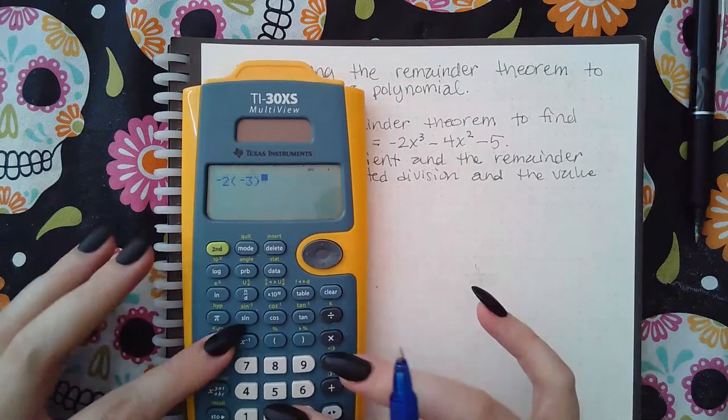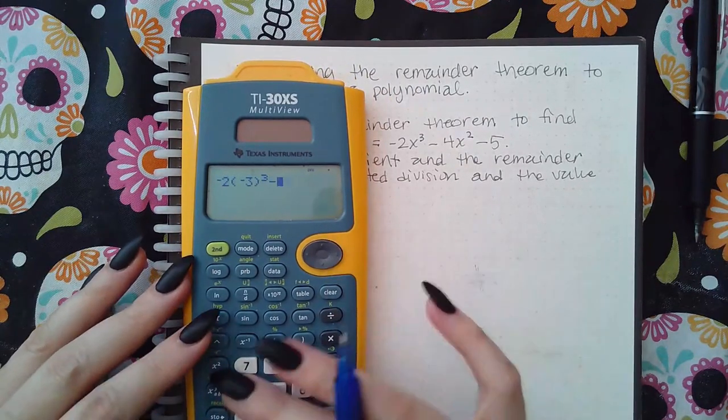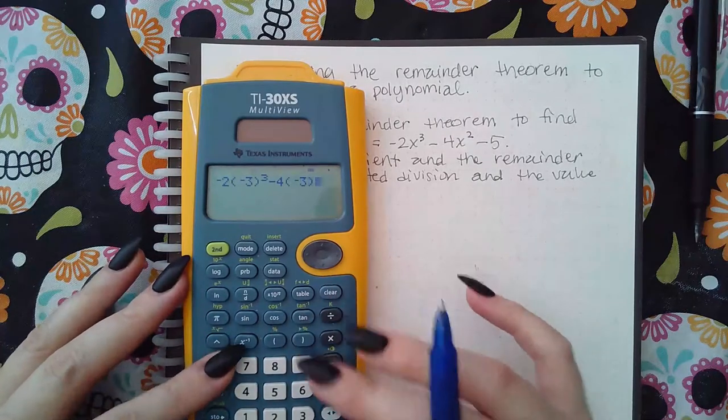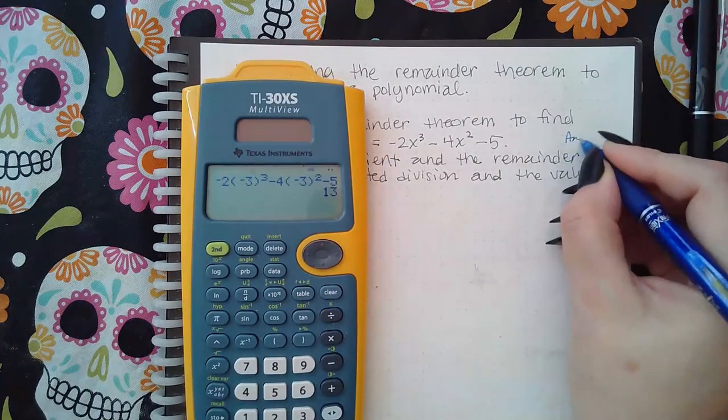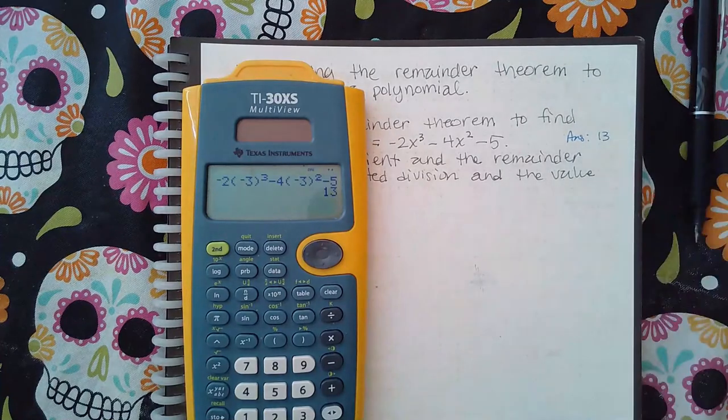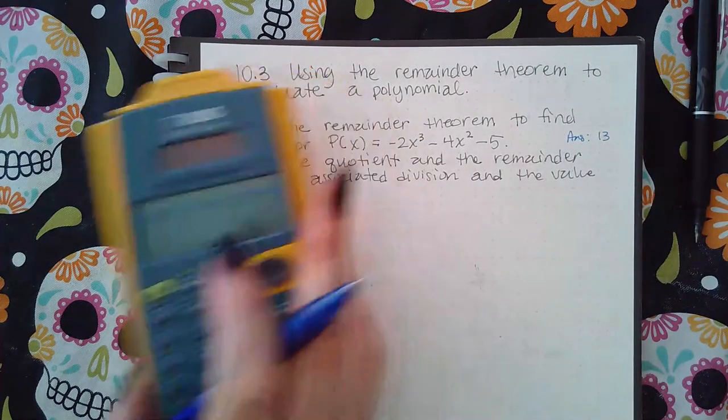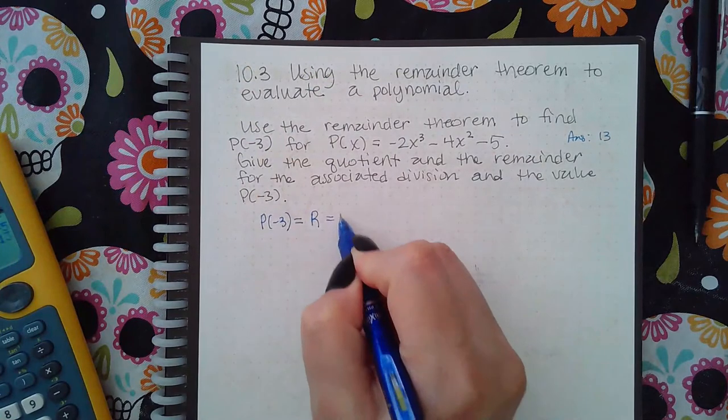Using my calculator: -2(-3)³ - 4(-3)² - 5. I know that the answer is 13. So p(-3) is going to equal 13.